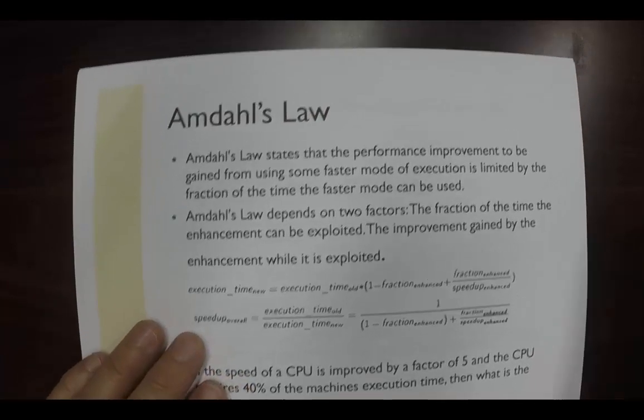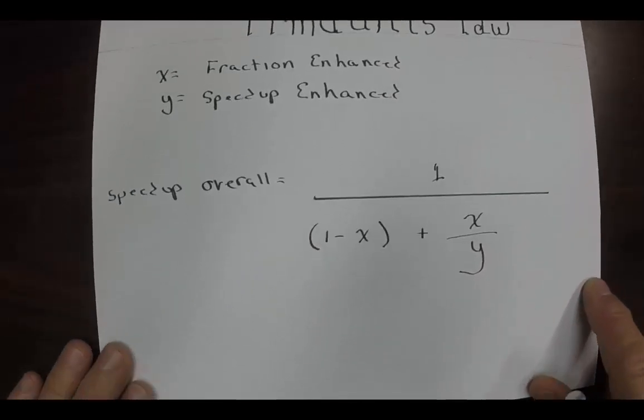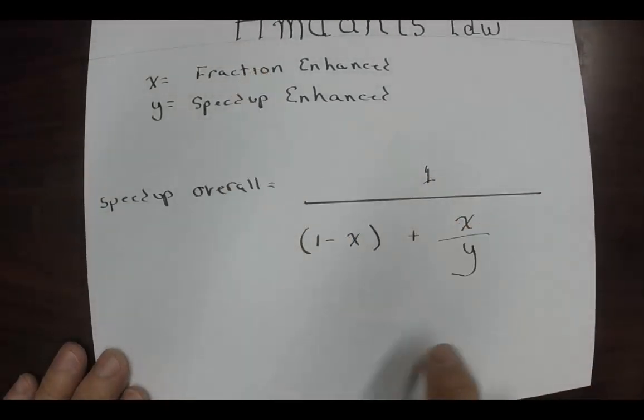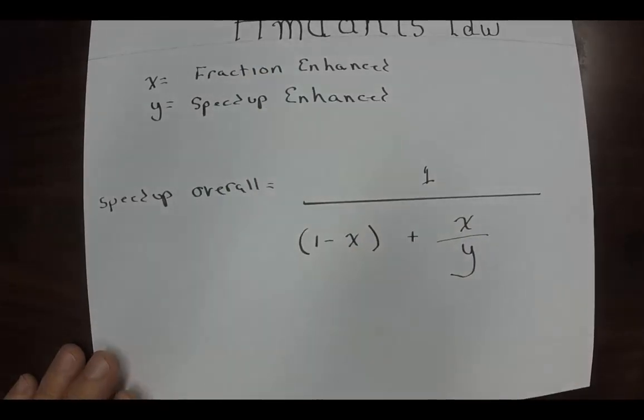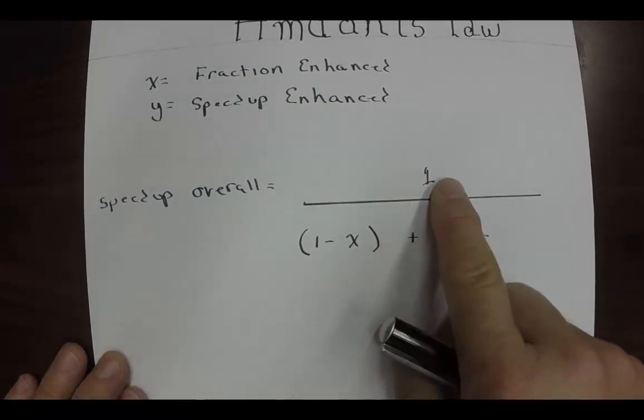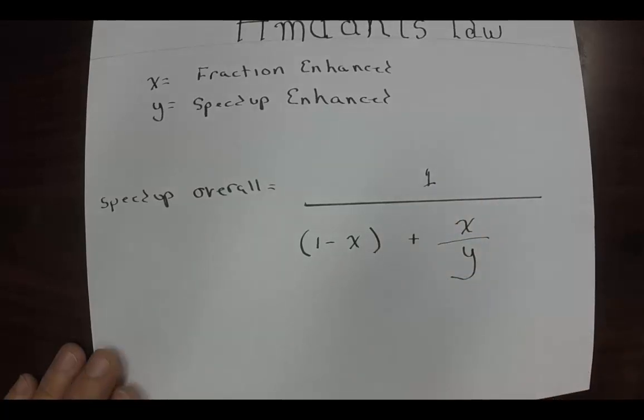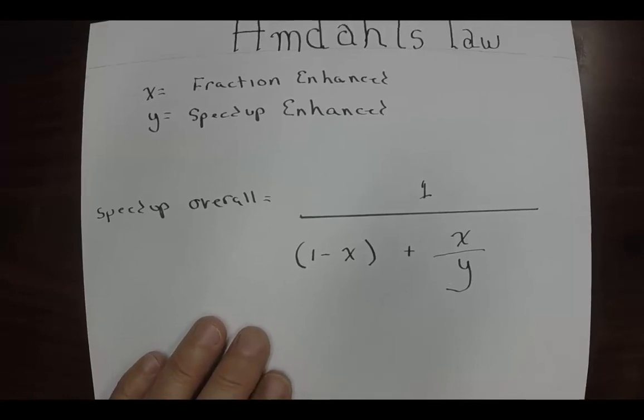All right, well here is the equation as we're going to see it. So this is what we're going to use: x being the fraction enhanced, y being the speed up enhanced. The speed up overall is equal to one over one minus x plus x over y. All right, so let's plug those in. Let's take a look at it.